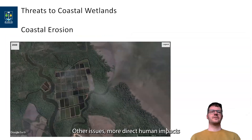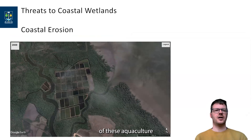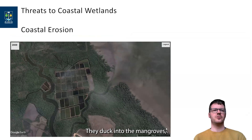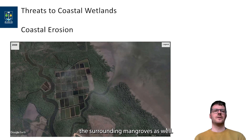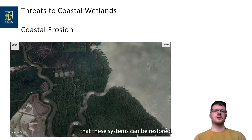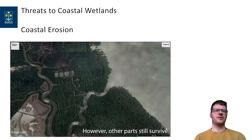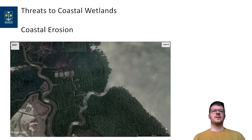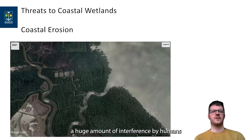Other issues — more direct human impacts — is land use change for aquaculture. This map here is from Indonesia, and you can see the individual ponds — these are aquaculture ponds mainly for shrimp — that have been cut into the mangrove forest. That obviously is a problem because the mangrove has been cleared for it, and there's potential risk of pollution that will negatively influence the surrounding mangroves. The good news is that these systems can be restored — this is the same area a couple of years later, where we can see the aquaculture ponds have almost disappeared and mangroves have regrown. However, other parts are still barren, so there's a lot of management needed in coastal wetlands.